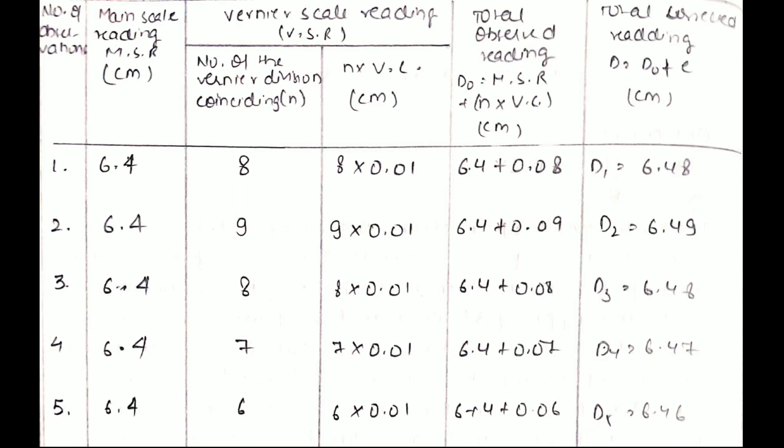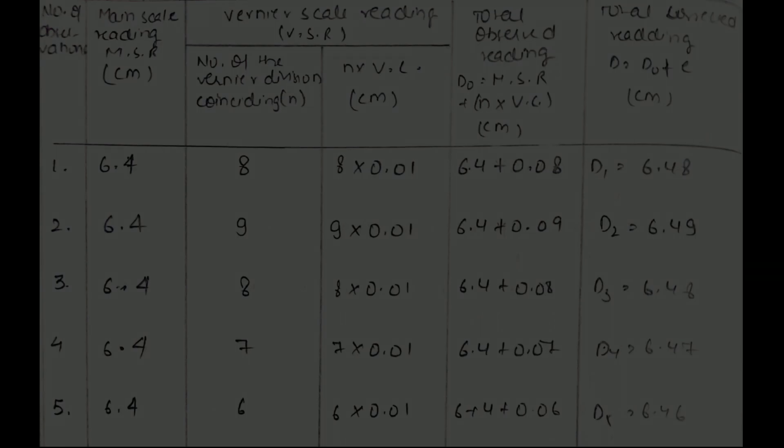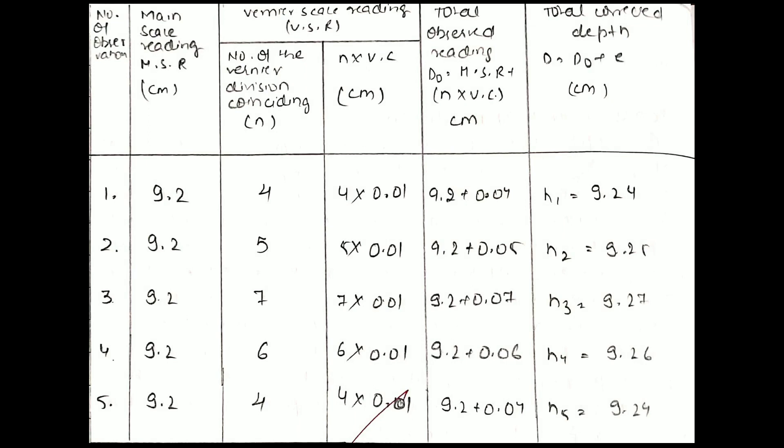In this image you can see the various readings that had been obtained by the vernier caliper for the height of the beaker. Here the MSR, which always remains constant, was 9.2 centimeter.